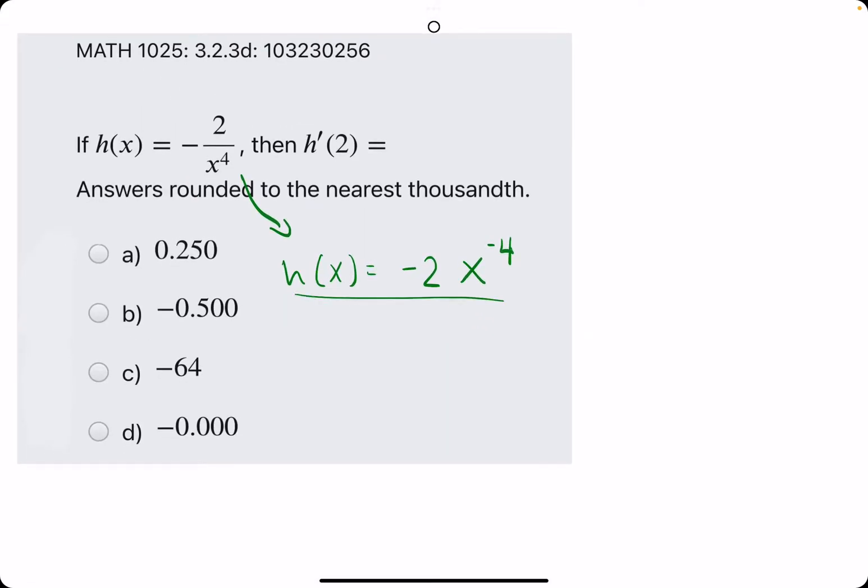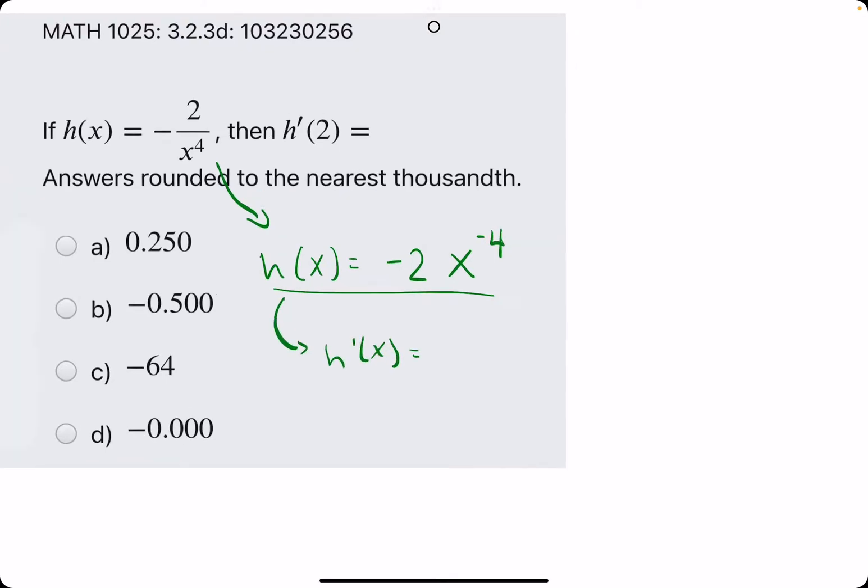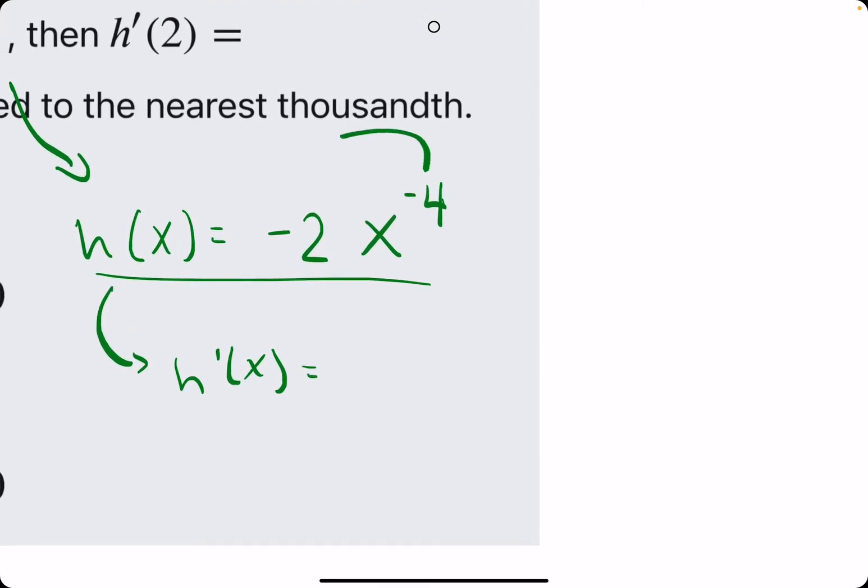So this is just the rewritten function. Now, if we find the derivative h'(x) using our power rule, we'll bring out this negative 4, multiply it by the negative 2 to get a positive 8. We leave the x and then we subtract 1 from the exponent. Negative 4 minus 1 will give us a negative 5. Keep in mind, subtracting 1 takes us further into the negative, so rather than negative 3, it becomes negative 5.